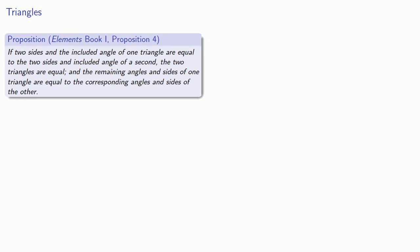If two sides and the included angle of one triangle are equal to the two sides and included angle of a second, the two triangles are equal, and the remaining angles and sides of one triangle are equal to the corresponding angles and sides of the other.